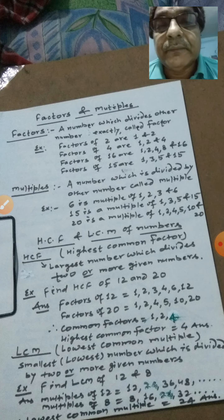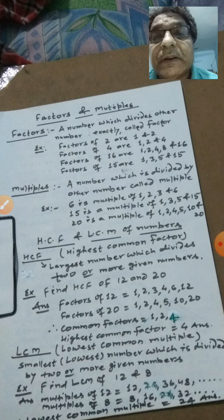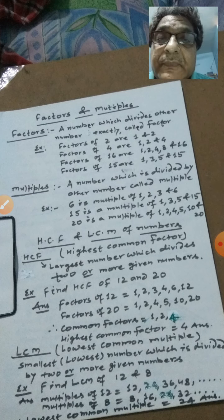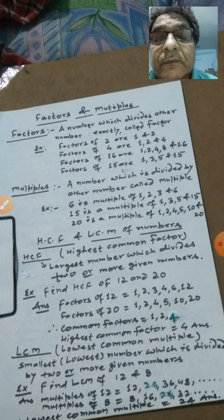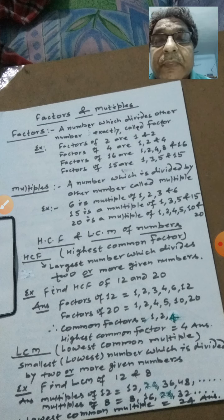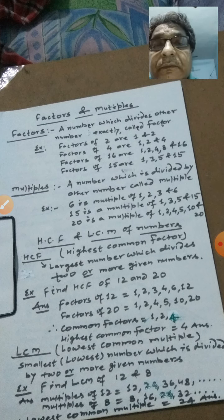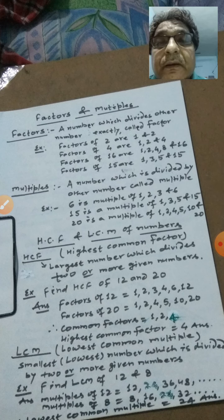Now we can see what we call a multiple. A multiple is the number which is exactly divided by the other number. For example, 6 is divided by 1, 2, 3, and 6 — this means the multiples of 6 include 1, 2, 3, and 6. So we can see which number we can divide.